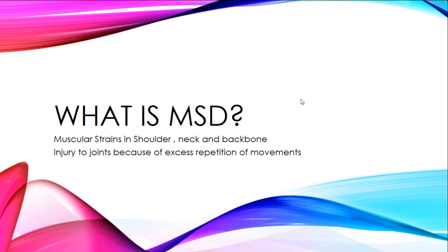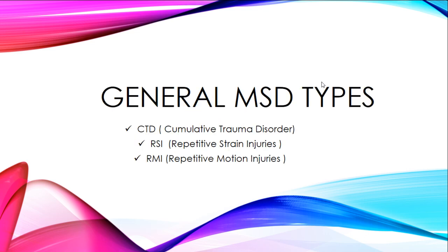The first complaint under MSD is muscular strain in the shoulder, neck, and backbone. The second is injury to joints because of excessive repetition of movements. There are three general types of MSD: CTD (cumulative trauma disorder), RSI (repetitive strain injuries), and RMI (repetitive motion injuries).